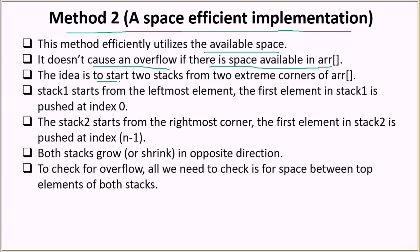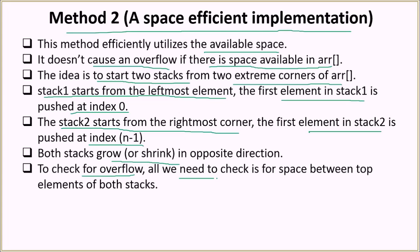The idea is to start the two stacks from two extreme corners of the array. Stack 1 starts from the leftmost element, and the first element of stack 1 is pushed at index 0. Whereas stack 2 starts from the rightmost corner, and the first element of stack 2 is pushed at index n-1. Both stacks grow or shrink in opposite directions. To check for overflow, we just have to check if there is space between the top values of both stacks.